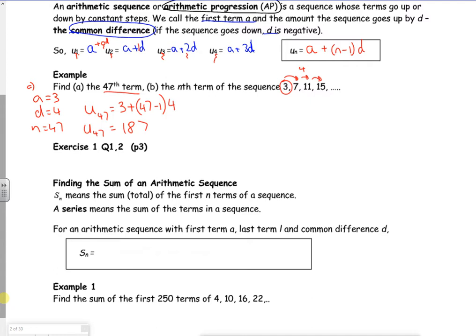Right, the nth term now. So same idea. A is 3. D is 4. N is N. So UN is A, which is 3, plus N minus 1, lots of 4. If I expand the brackets, UN is 3 plus 4N minus 4. So UN is 4N minus 1. There you go. I've got like an equation that works it out in a different way.